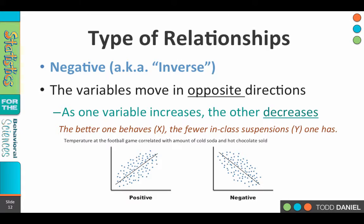Or with our temperature at the football game, as temperature goes up, the sales of hot chocolate go down, opposite, and as the temperature drops, the sales of hot chocolate increase. Those variables move in the opposite direction.